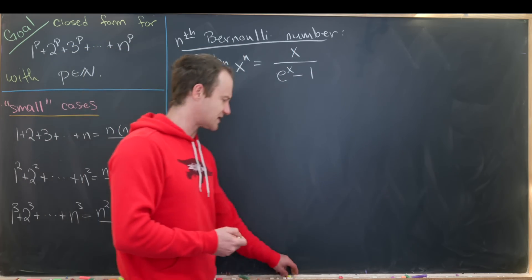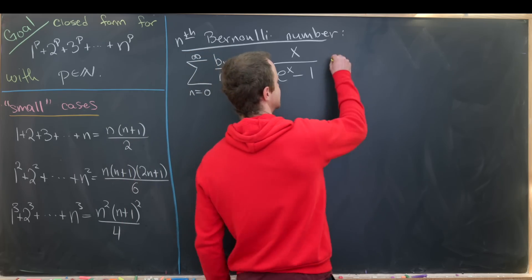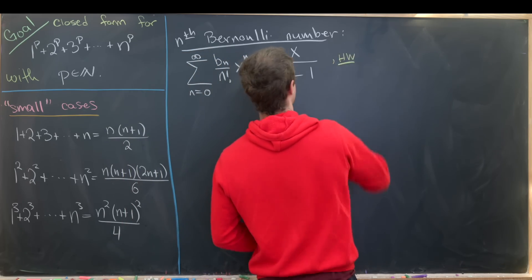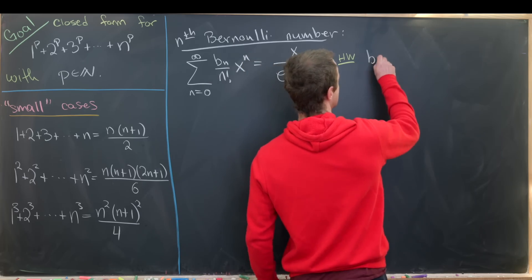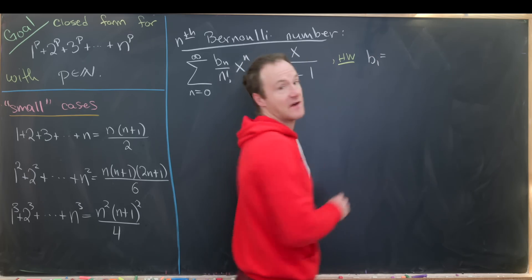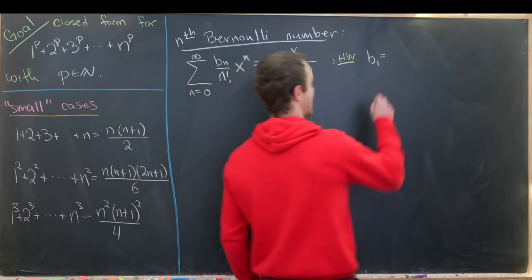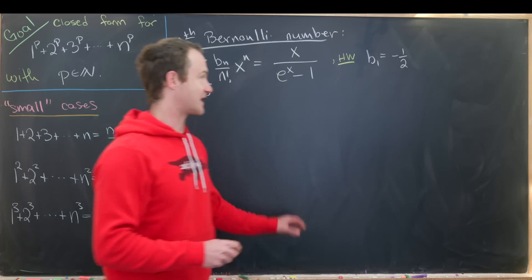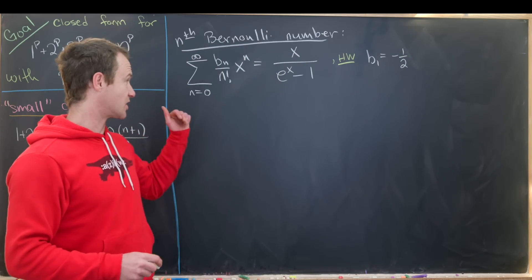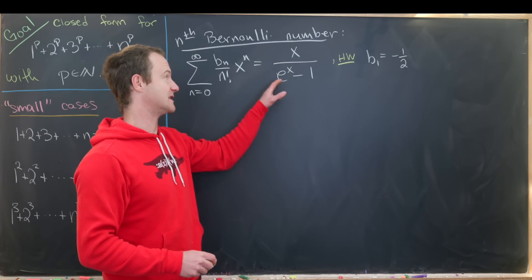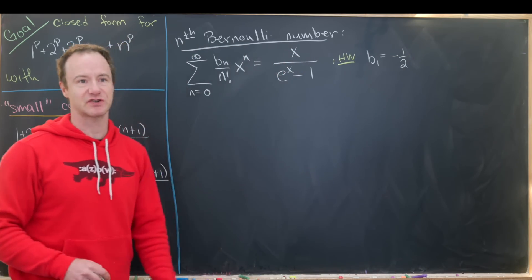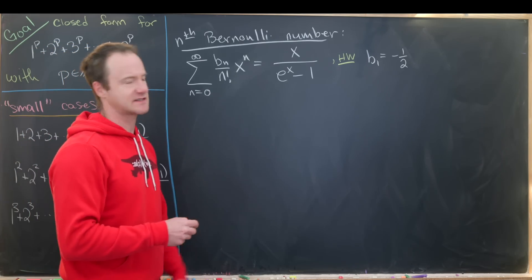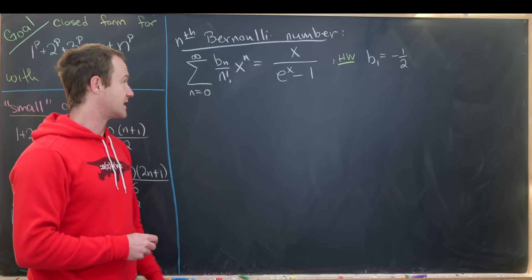As a homework exercise, you can check that b_1 is equal to negative one-half. That's not too hard to verify by expanding x/(e^x - 1) as a geometric series and looking at the coefficient of x to the first power.